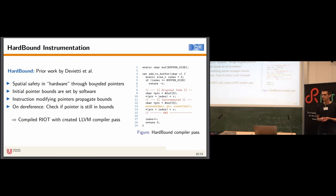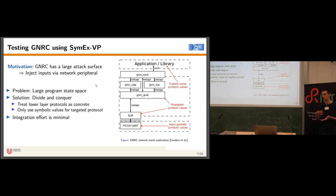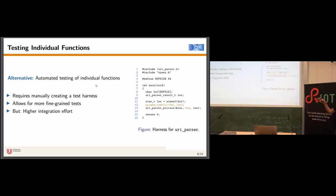A question about integration with RIOT: if I get SymEx-VP, do I need to do anything to the RIOT code base to use it? With the approach where we inject test inputs through a peripheral, you don't need to do anything in terms of integration effort, because the application is just simulated in a normal hardware environment receiving inputs through the peripheral interface. But you do need to compile RIOT with our HardBound compiler pass to detect spatial violations. With the other approach, you need to write small test harnesses for individual functions.